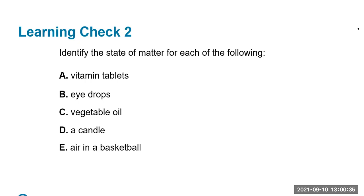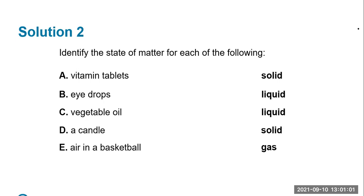Identify the state of matter for each of the following: vitamin tablets should be solid, eye drops should be liquid, vegetable oil should also be liquid, candles are usually solid until you start melting them. Air in a basketball is a gas — as we fill up a basketball with air, we're putting gas molecules in there. As they're flying around, they cause a certain amount of pressure, which keeps the basketball not flat and able to bounce.